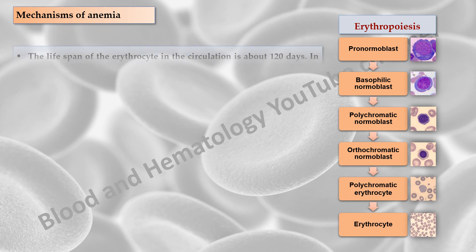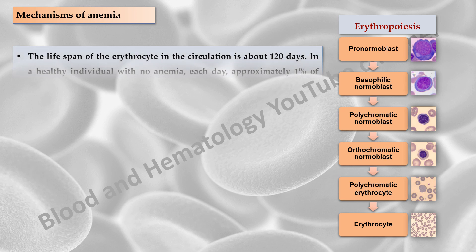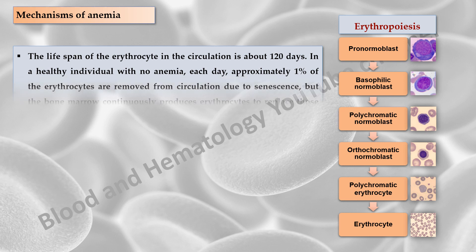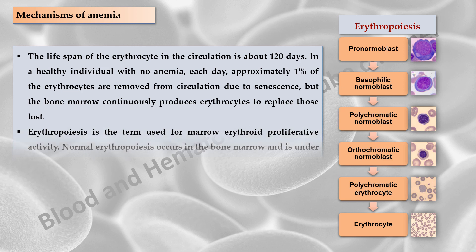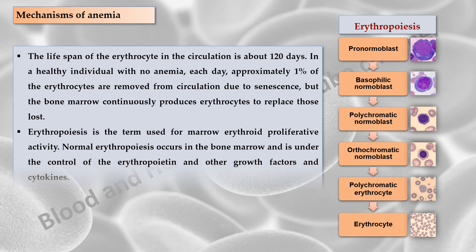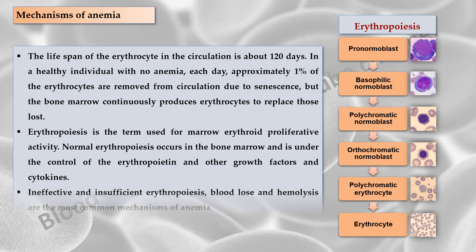The lifespan of the erythrocyte in the circulation is about 120 days in a healthy individual with no anemia. Each day approximately one percent of the erythrocytes are removed from circulation due to senescence, but the bone marrow continuously produces erythrocytes to replace those lost. Erythropoiesis is the term used for marrow erythroid proliferative activity. Normal erythropoiesis occurs in the bone marrow and is under the control of erythropoietin and other growth factors and cytokines. Ineffective and insufficient erythropoiesis, blood loss, and hemolysis are the most common mechanisms of anemia.